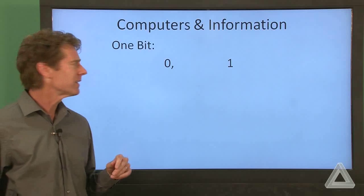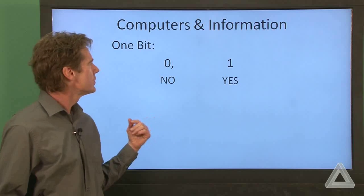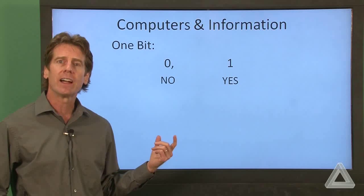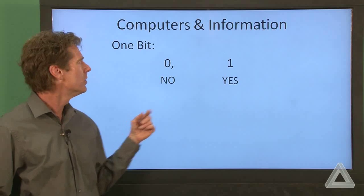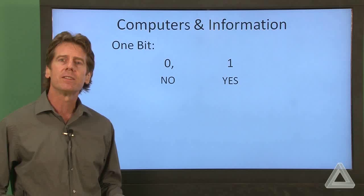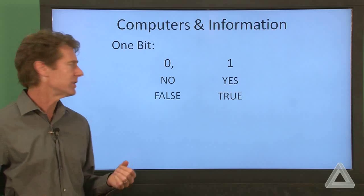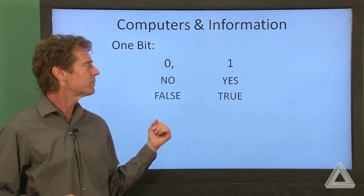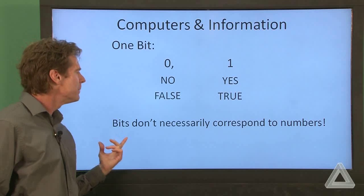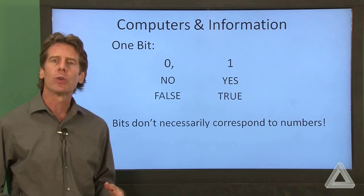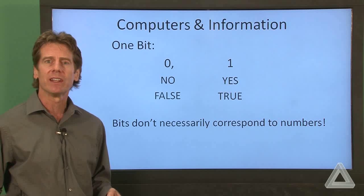But in fact, how about if we ask a yes-no question, we can store the answer to that question using a single bit. We might say the zero corresponds to no and the one corresponds to yes. Or we could ask a true-false question and again store the response with a single bit. So the important thing to keep in mind here is that bits don't necessarily correspond to numbers. They can represent information in the more general sense.